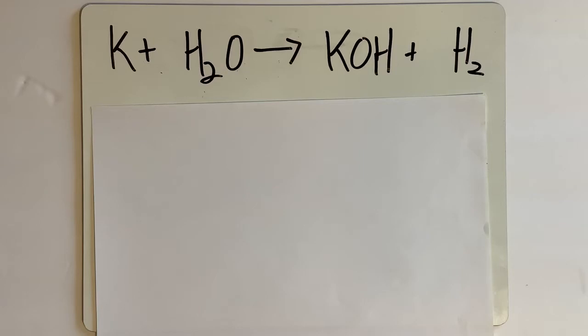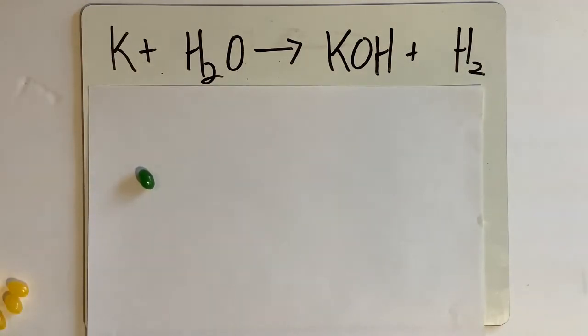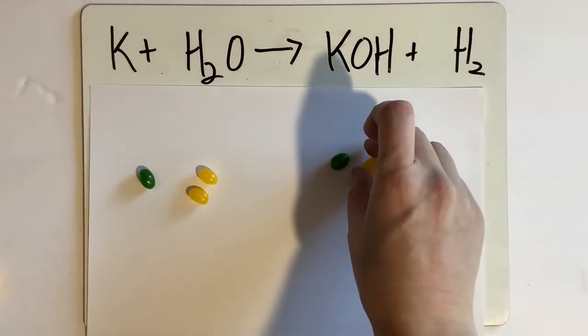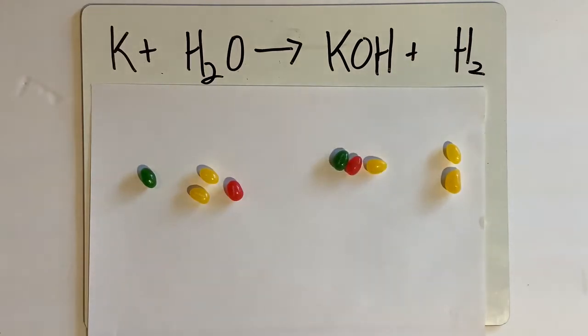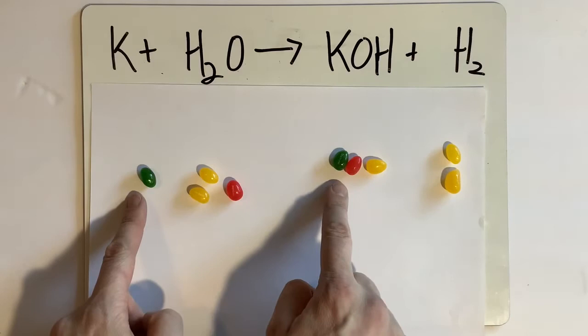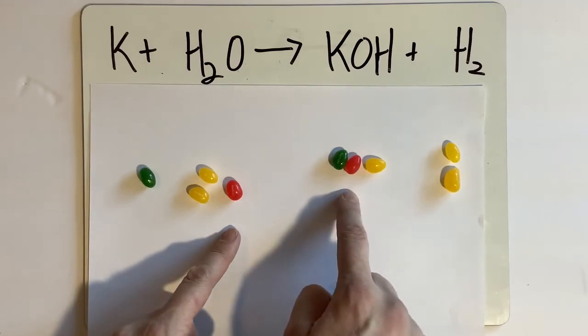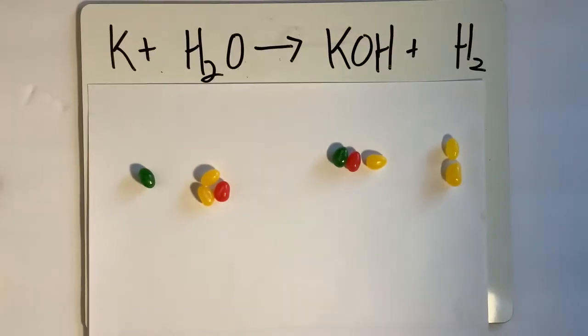Balancing reactions makes sense to a lot of people, but some people are more hands-on learners. So I'm going to use something delicious. We're going to balance with jelly beans. Let's say potassium is represented by a green jelly bean, and I have one potassium on each side. Now let's say my hydrogen is represented by a yellow jelly bean. Here I have two hydrogens. Here I have one hydrogen and two here. And now I also need oxygen, so I'm going to make that a pink jelly bean. One and one. The only thing that's not balanced is my yellows. The only thing uneven here is my hydrogen.